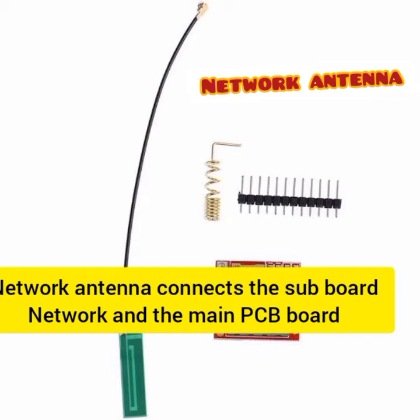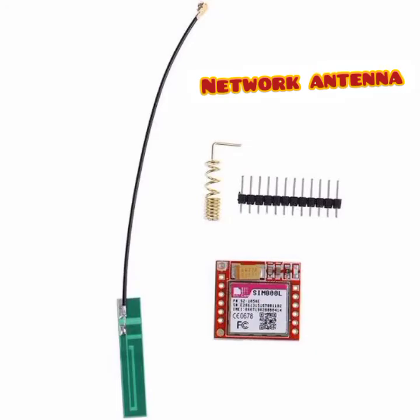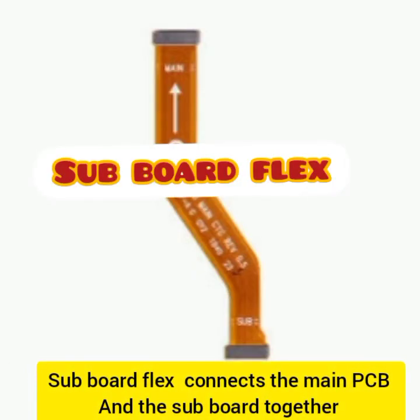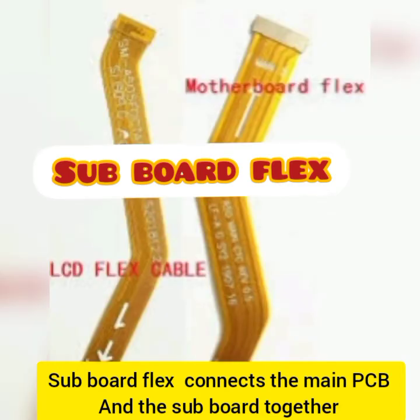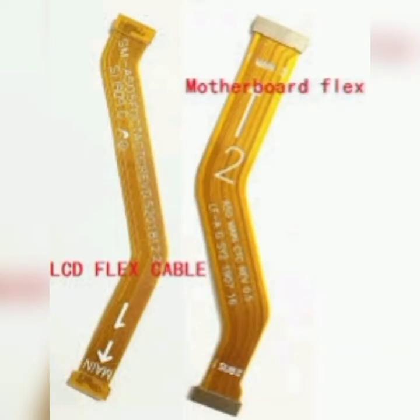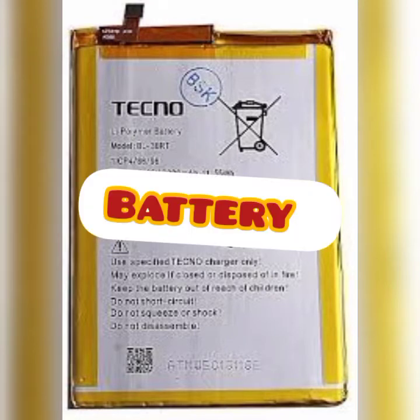The network antenna enables network to flow freely on the mobile phone. It is connected from the main PCB board to the sub-board. Without it, the network signal won't be strong on the mobile phone. The sub-board flex is the flex cable that connects the main motherboard to the down board.